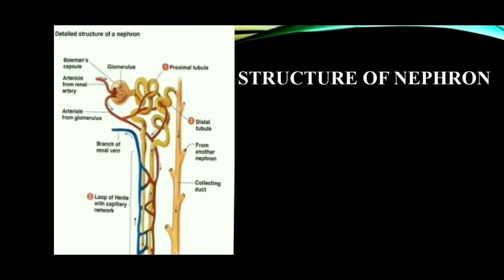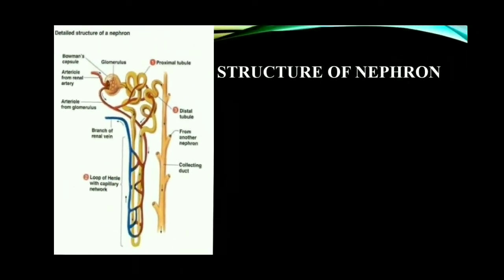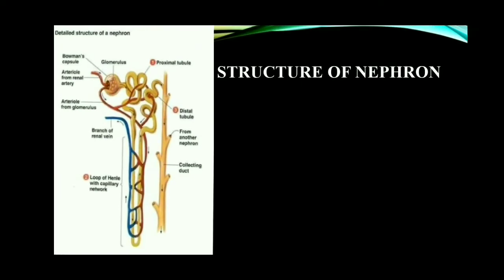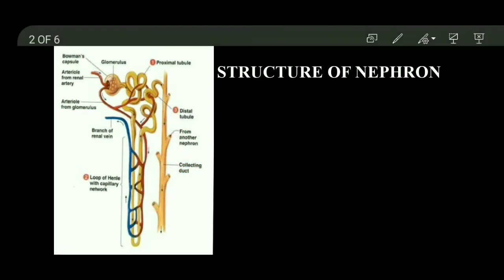The proximal convoluted tubule, distal convoluted tubule, and loop of Henle are collectively called the renal tubule. So each nephron consists of two parts: the renal corpuscle and renal tubule. The final part of the nephron opens into a long tube-like structure called the collecting duct — the distal convoluted tubule opens into this collecting duct. The collecting duct has many branches, and many nephrons are joined to this collecting duct.